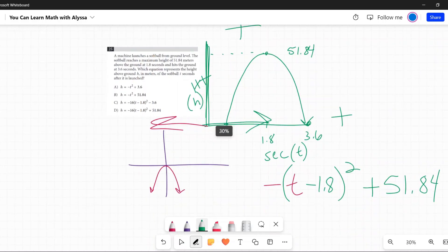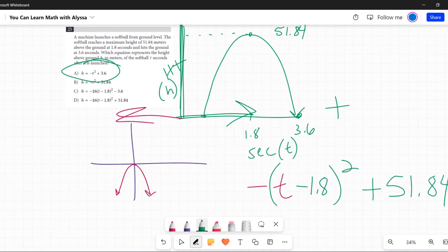So I don't know if there should be a number out here or not, but let's look at our answers and see if there's anything that's close to what we've written here. Negative t squared plus 3.6? Nope, not even close. Negative t squared plus 51.84? All right, we've got that plus 51.84 but we don't have that minus 1.8, so that one's out.